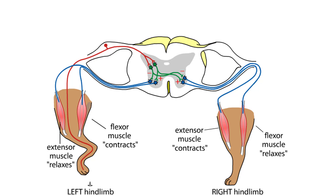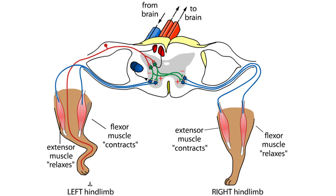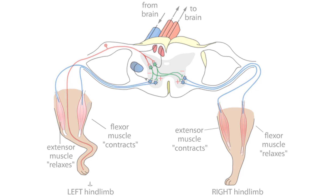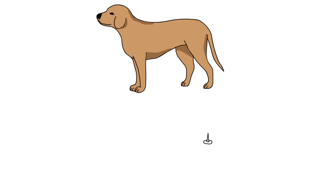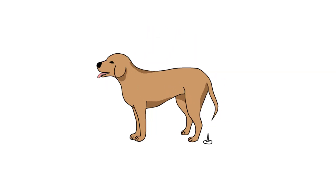Sensory information is also relayed up the spinal cord to the brain, where it can be further processed. Ultimately, signals from the brain travel back down the spinal cord along motor pathways, and can thus modify the actions of the spinal circuits. The information from higher nervous centers permits fine-tuning of muscular control and also allows the dog to avoid painful stimuli in future encounters.